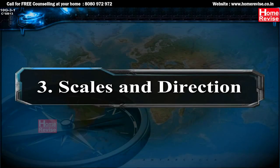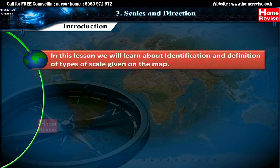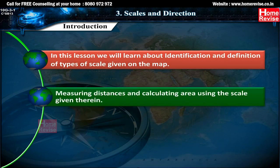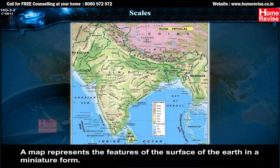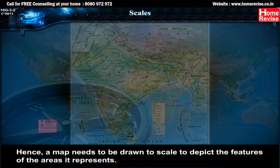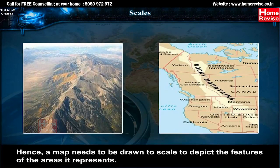Chapter 3: Scales and Direction. In this lesson we will learn about identification and definition of types of scale given on the map, measuring distances and calculating area using the scale given therein, and marking directions between different locations using 8 cardinal points. A map represents the features of the surface of the earth in a miniature form, hence a map needs to be drawn to scale to depict the features of the area it represents.